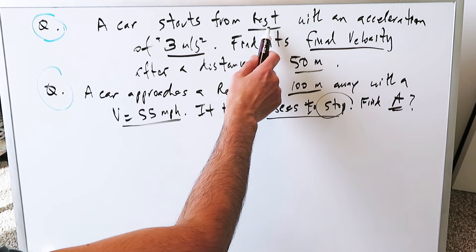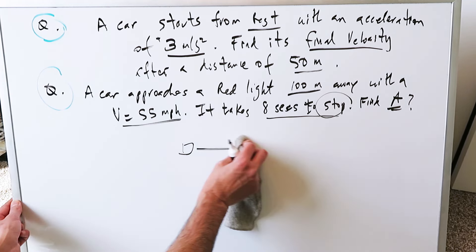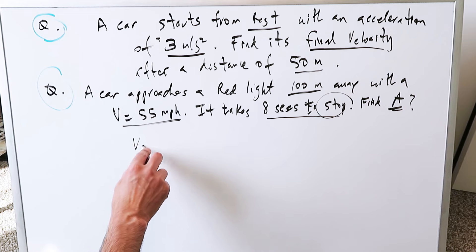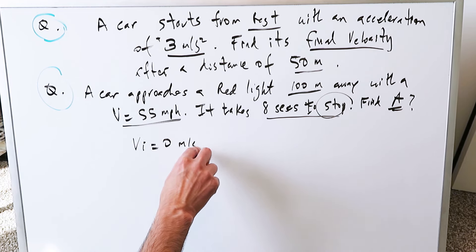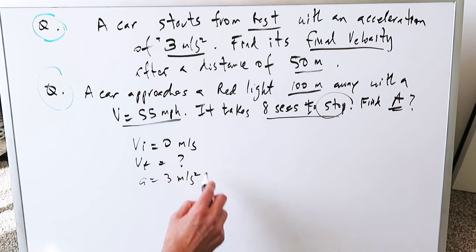A car starts from rest with an acceleration of 3 meters per second squared. You have to find its final velocity after a distance of 50 meters. There is nothing here mentioned with regards to time. You're looking at a car which was stopped, but now it's moving. It could have been stopped at a red light. Now it's beginning to move. You have here, because it was stopped, an initial velocity of 0 meters per second. A final velocity has to be determined. An acceleration is given 3 meters per second squared. And you have a distance after which you have to determine the velocity of the car.